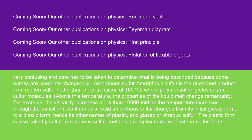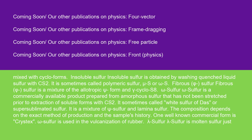Above 160°C, the properties of the liquid melt change remarkably; for example, the viscosity increases more than 10,000-fold as the temperature increases through the transition. As it anneals, solid amorphous sulfur changes from its initial glassy form to a plastic form, hence its other names of plastic and glassy or vitreous sulfur. The plastic form is also called chi-sulfur. Amorphous sulfur contains a complex mixture of catena-sulfur forms mixed with cyclo-forms.